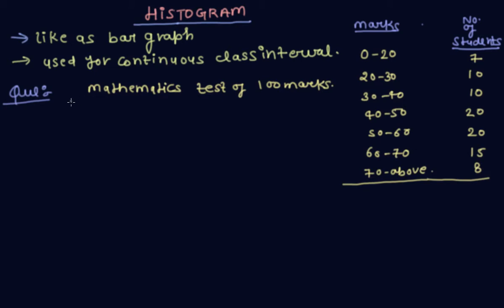Looking at their performance, she found that a few students got 70 marks, so she decided to group them into intervals of varying size: 0 to 20, 20-30, 30-40, 40-50, 50-60, 60-70, and 70 above. Then she formed the following table. Now you draw a histogram for this table.